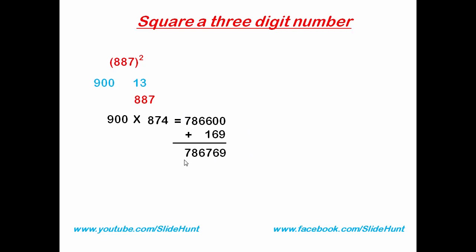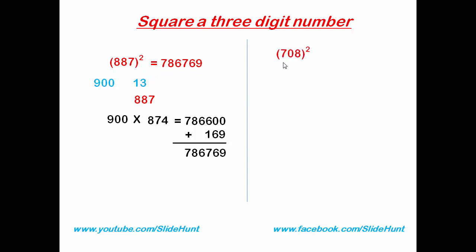The result is 786769, so the square of 887 is 786769. The next number is 708.